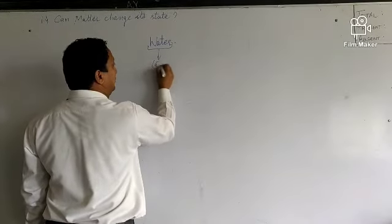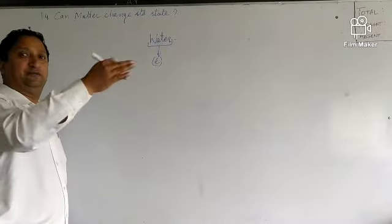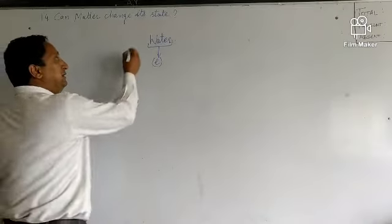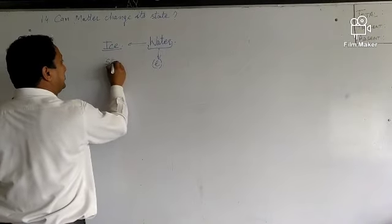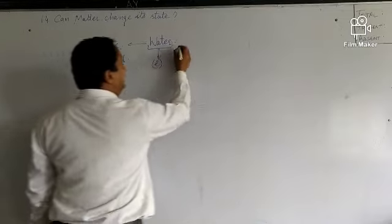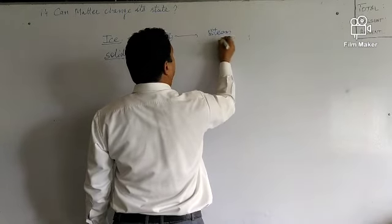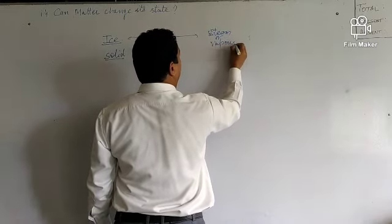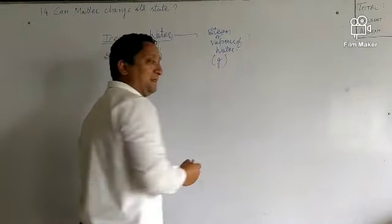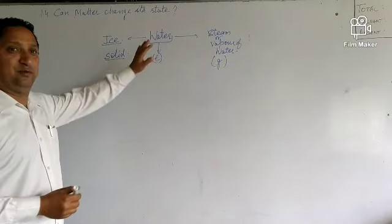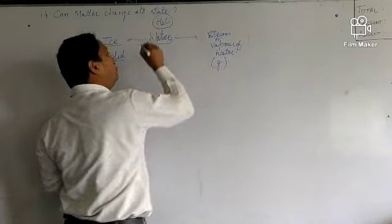Water is in the liquid state — water can flow and it changes its shape when put in different containers, so it is a liquid. Then we know ice, which is a solid. And we also know steam or vapors of water, which is the gaseous state. So one substance, water, has the chemical formula H₂O.